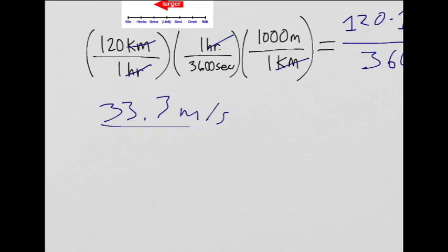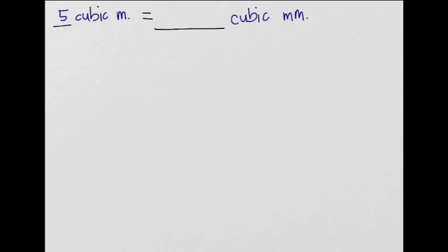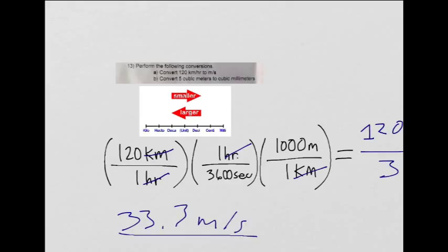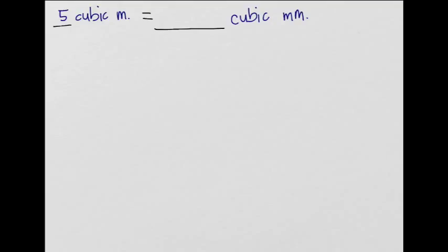Now let's move on to part B. We have to convert five cubic meters to cubic millimeters. Here we have five cubic meters equals some amount of cubic millimeters. That could also be written as five meters cubed equals some undetermined amount millimeters cubed. So let's do that.